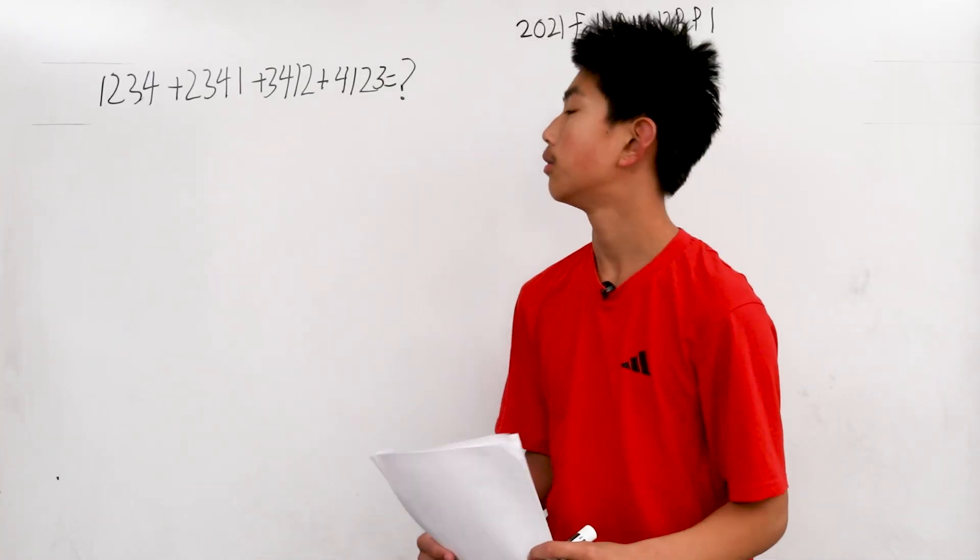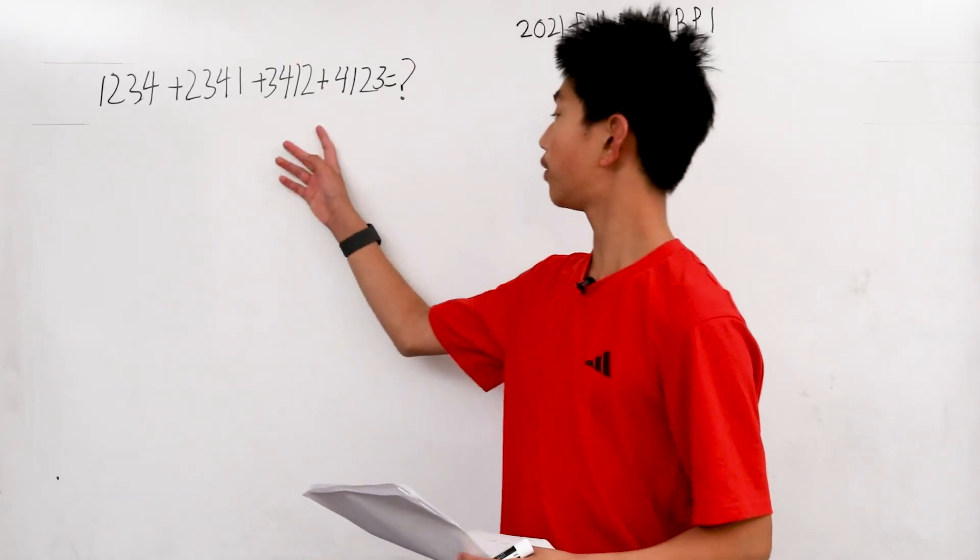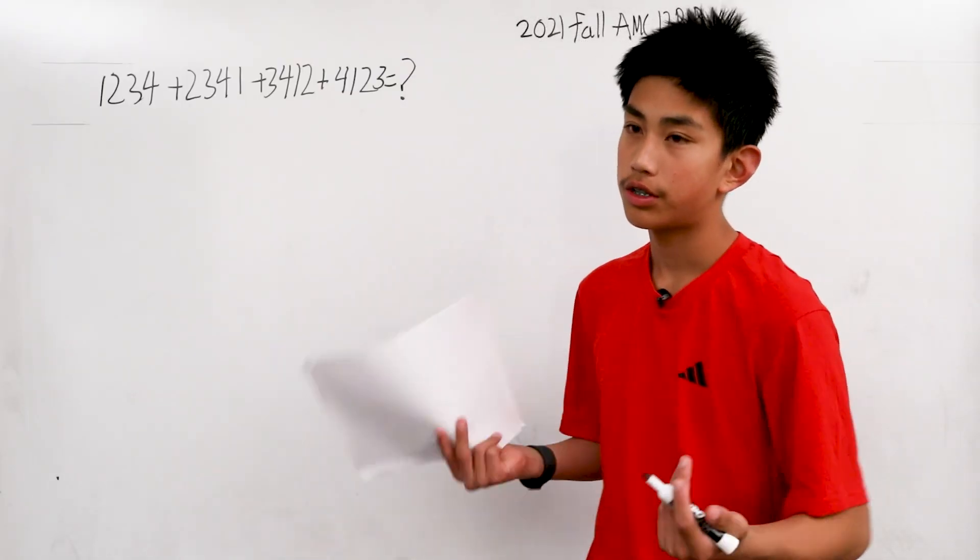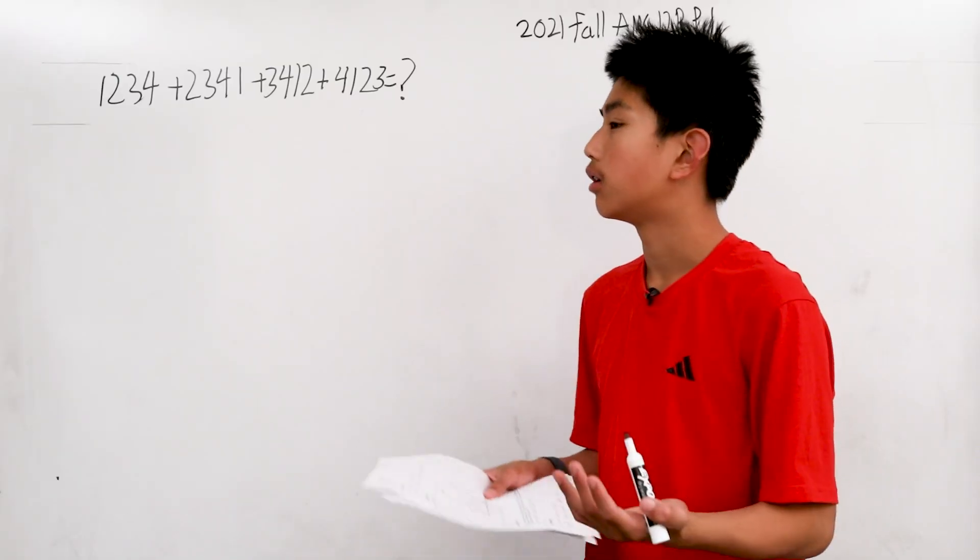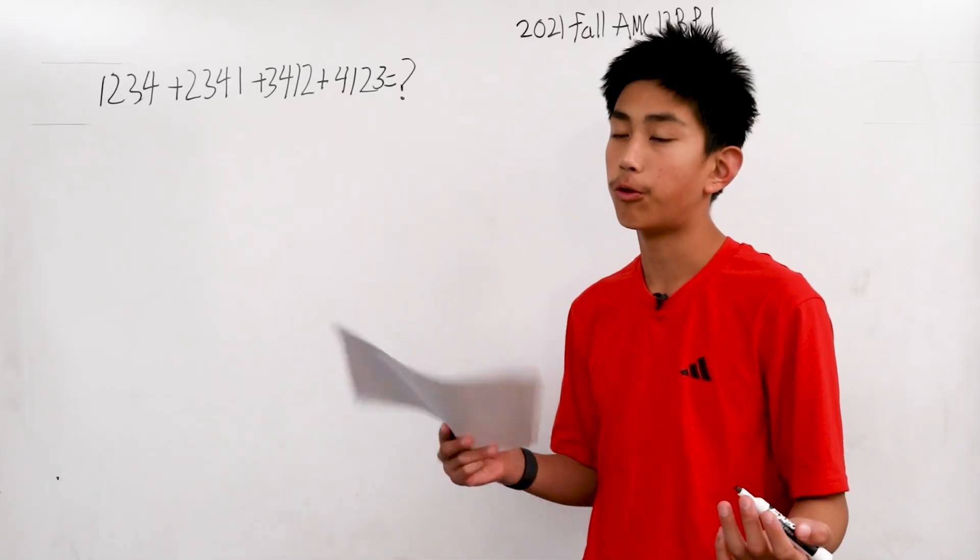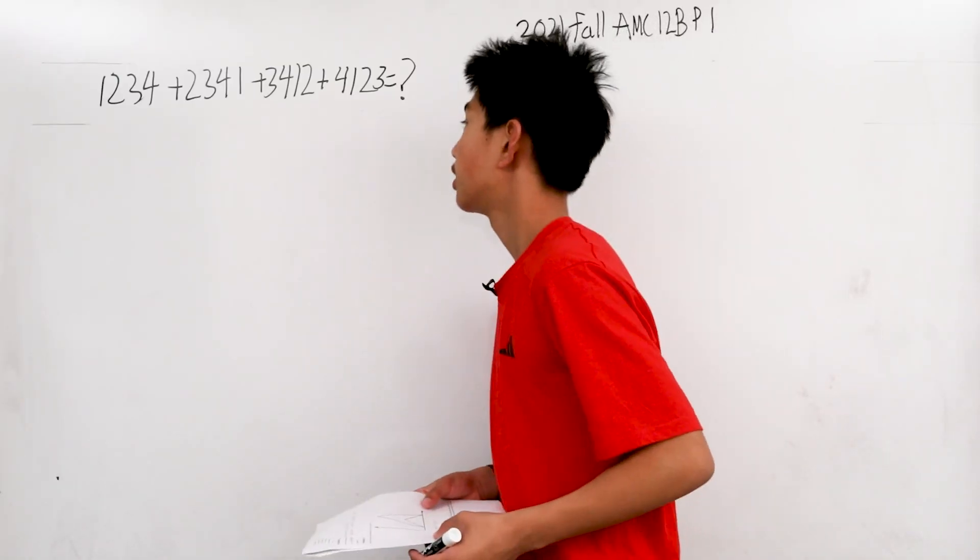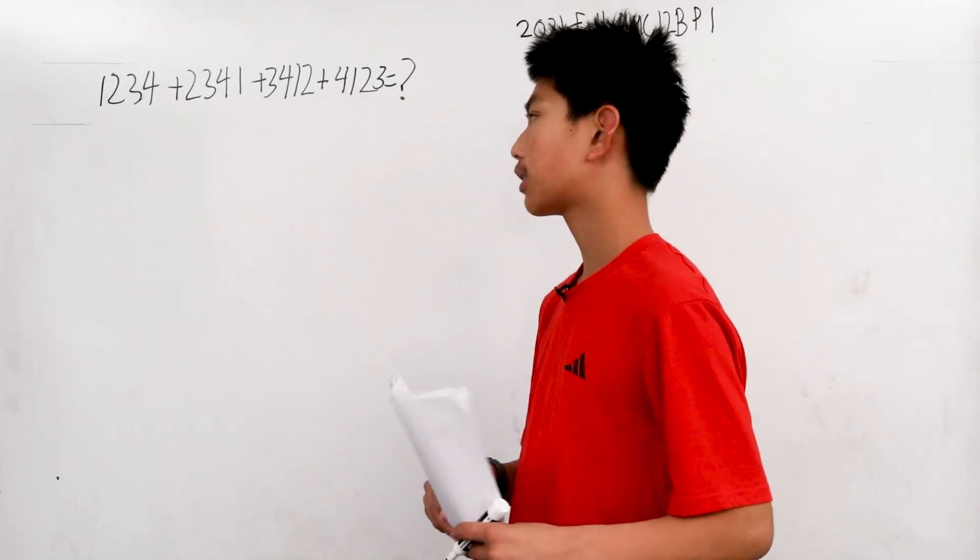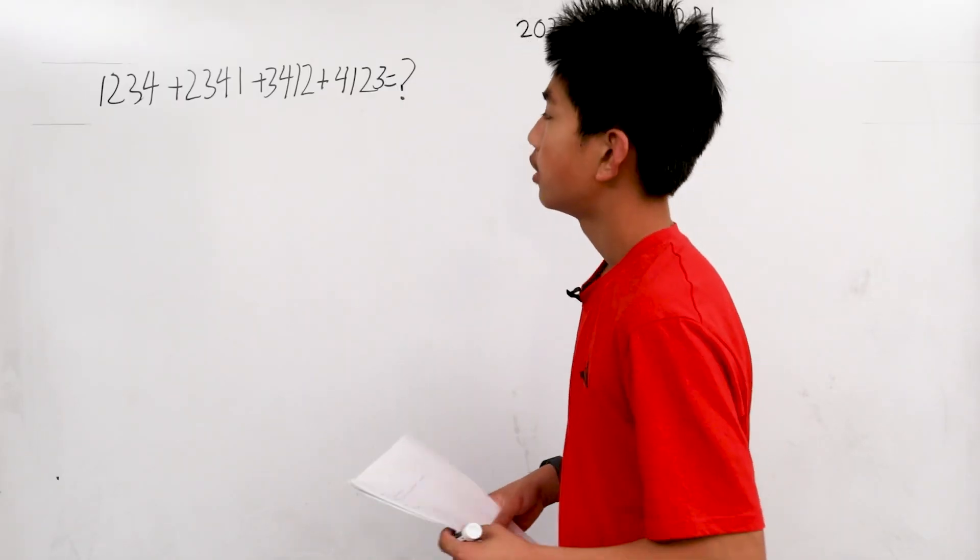So we want to be quick in solving during the test, and since basically everyone who signs up for these competitions can do this summation, you don't want to directly add them. You want to notice that each respective digit has a one, two, three, and four.